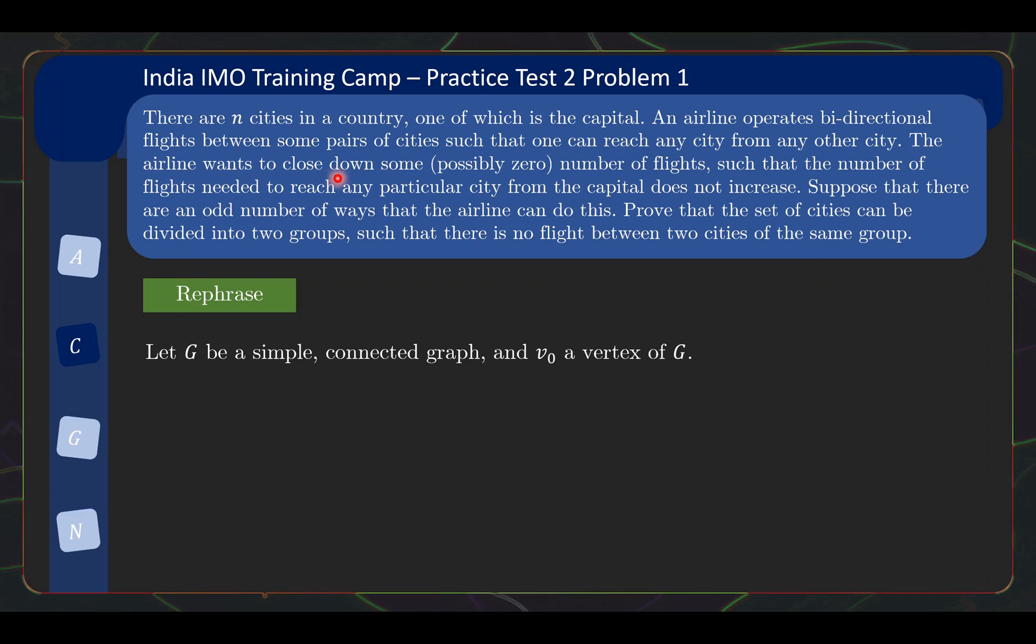The graph is connected because one can reach any city from any other city. And then we have a distinguished vertex which is the capital which I will call V0. Let's continue the problem. The airline wants to close down some, possibly zero number of flights, such that the number of flights needed to reach any particular city from the capital does not increase. So basically, we say that a series of moves where we delete some edges, possibly none, but we keep the distance of any vertex from V0, it does not increase. Then we call this series of moves a valid simplification.